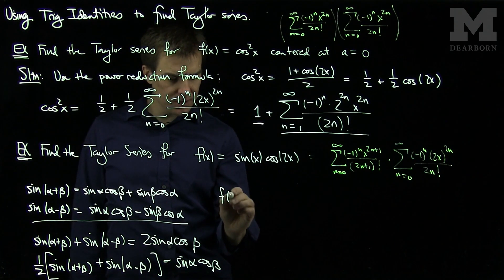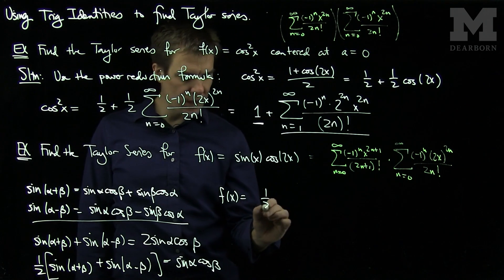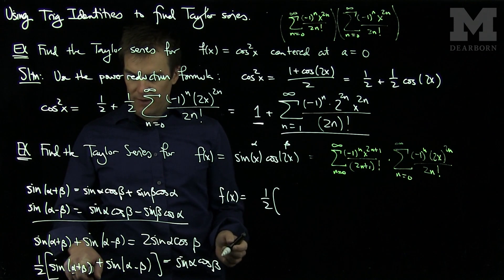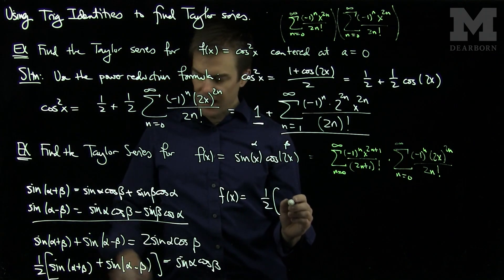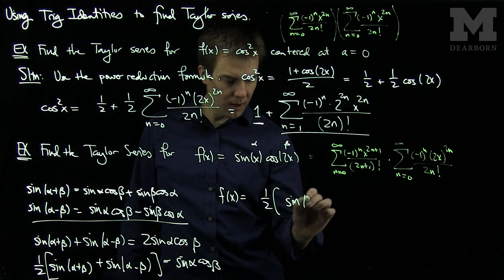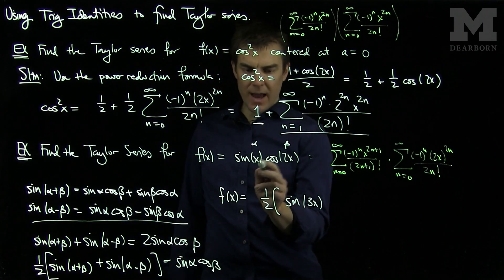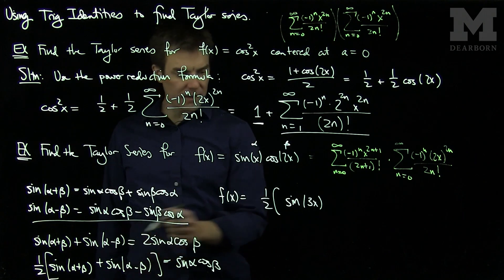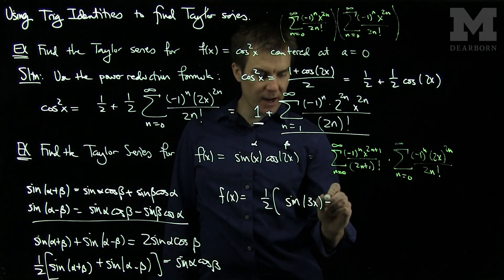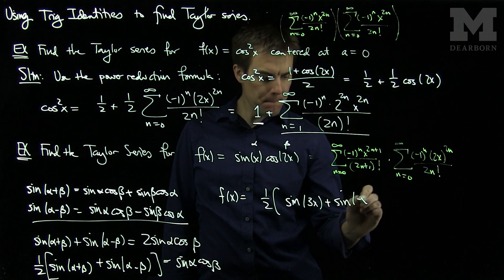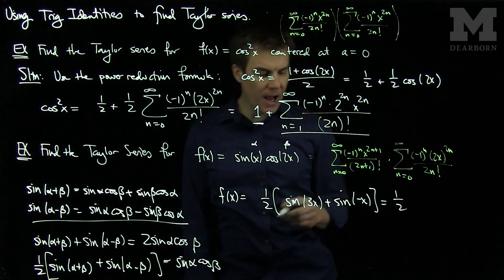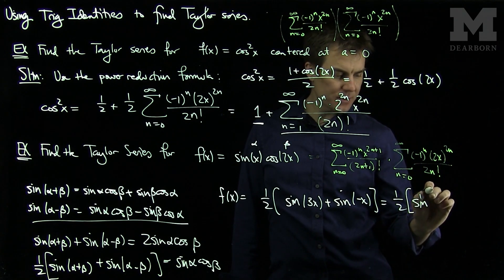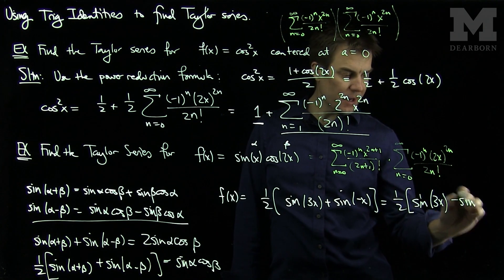We apply the product-to-sum formula to f(x) with α = x and β = 2x. So α+β = 3x, and α−β = x − 2x = −x. Since sine is an odd function, sin(−x) = −sin(x). Therefore f(x) = (1/2)[sin(3x) − sin(x)].